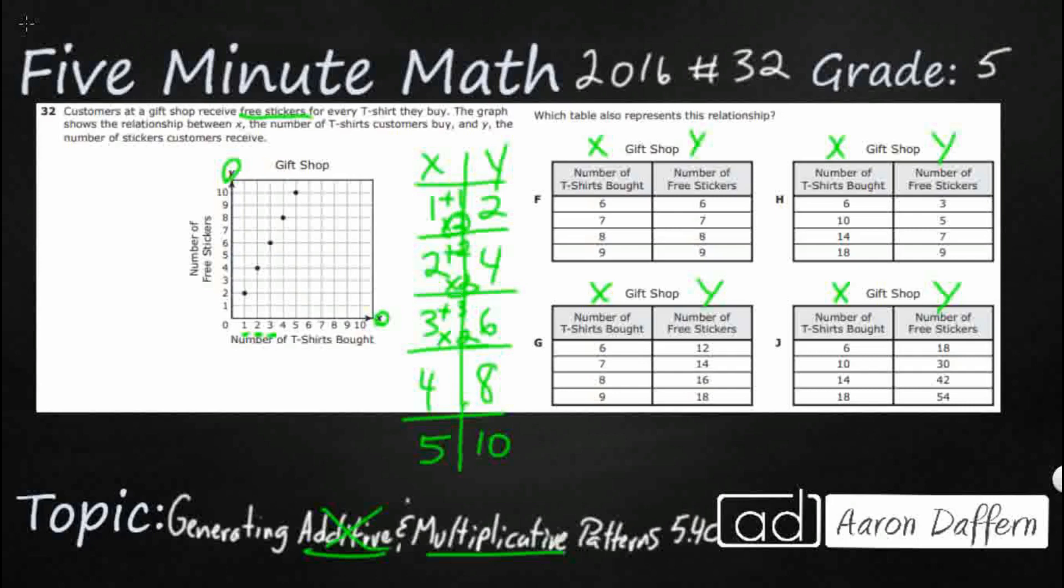We're simply going to multiply by 2. You take your x, which is the number of t-shirts bought. You double it, multiply by 2, and you're going to get your y, the number of free stickers. So, let's see which of these gets you a multiply by 2 relationship. And if we can find that multiplicative relationship, we will be good to go.